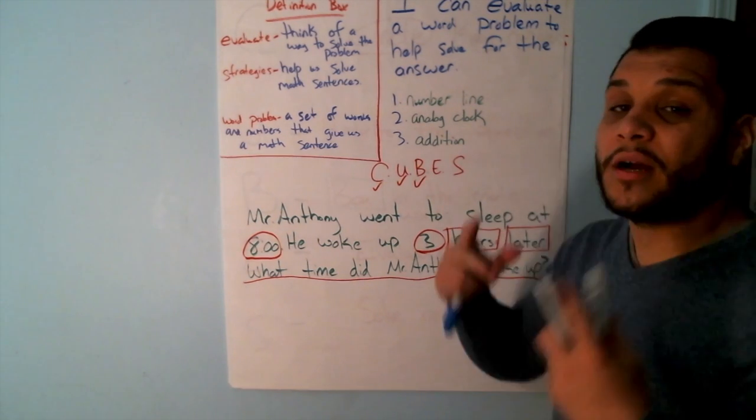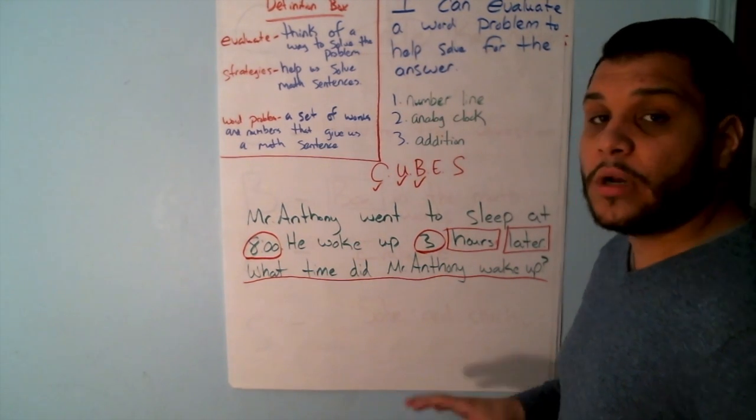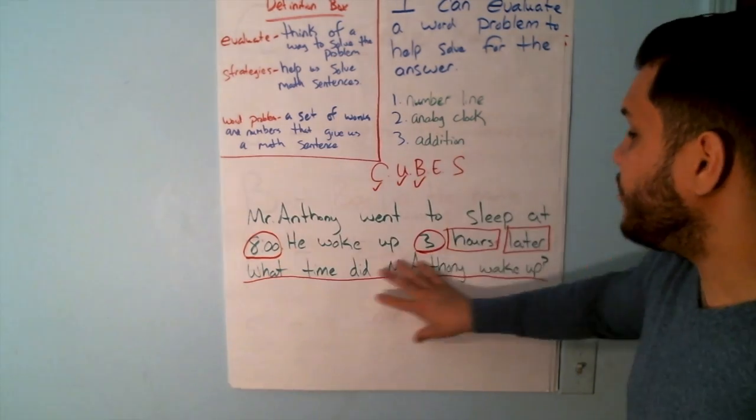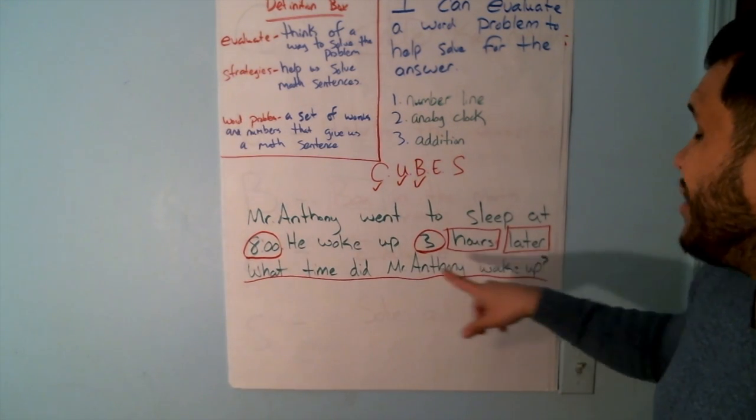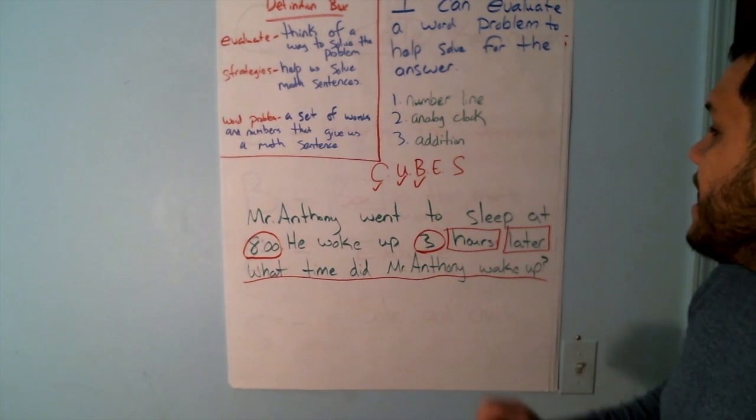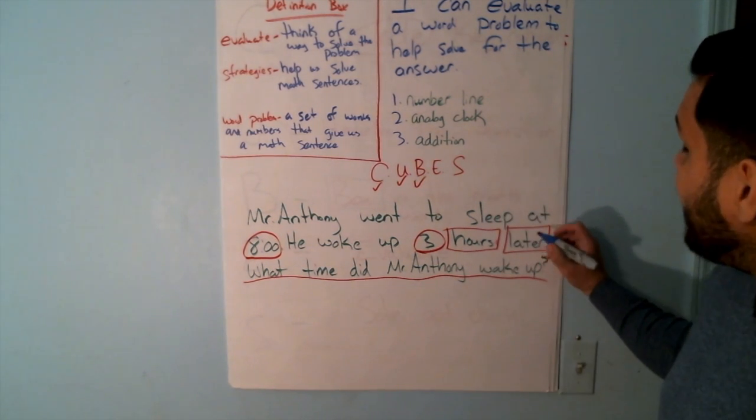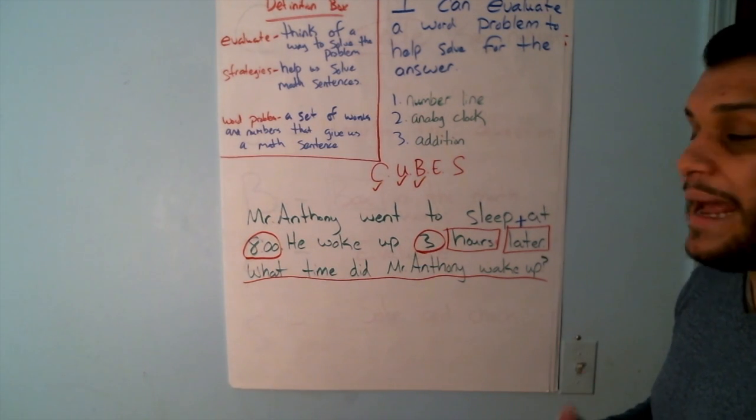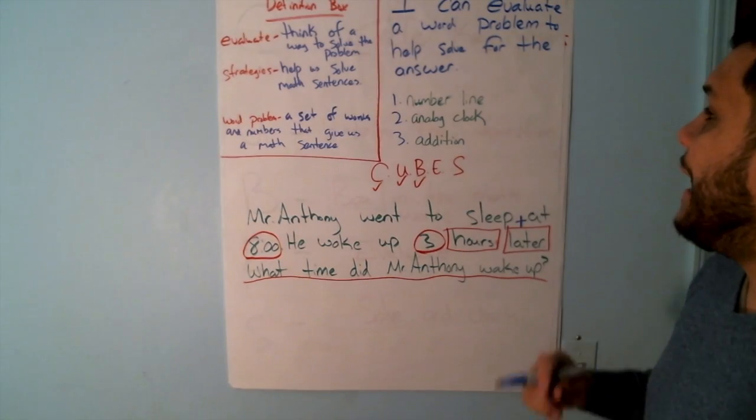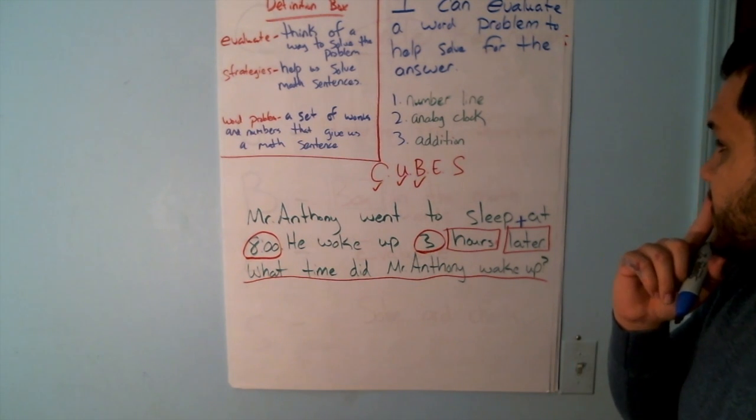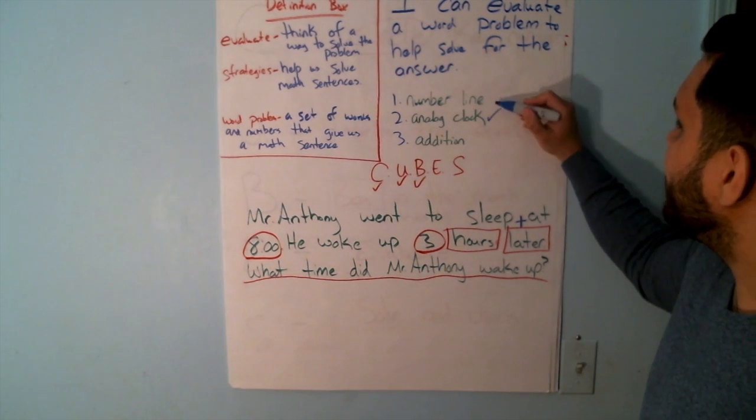So we did our B. Now we're going to go into what we are learning today. I can evaluate a word problem to help solve for the answer. So now I'm going to take a step back and evaluate everything that I have here. I know I have two key numbers. I know they're trying to find out what time did he wake up. I have hours and later, which means addition. So I evaluated. Now I'm going to think about what strategy I'm going to use. I think I'm going to focus on my analog clock and my number line.